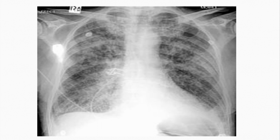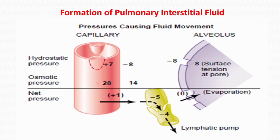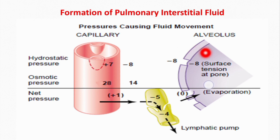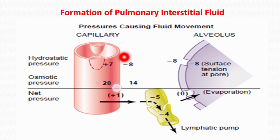In order to understand the pathophysiology of pulmonary edema, we must first understand the formation of interstitial fluid in the lungs. Here you can see the pulmonary capillary, the pulmonary interstitium, and the alveolus. As everywhere else, interstitial fluid formation is governed by four Starling forces.